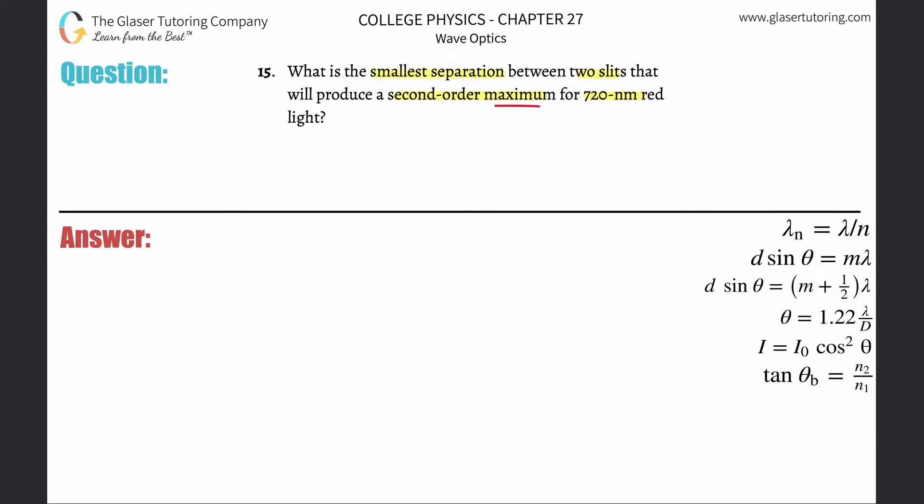It's talking about a maximum, so it's constructive interference. We're going to use this formula on the right. This formula deals with double slit constructive interference. The distance between slits multiplied by sine of the angle equals the order multiplied by the wavelength: d sin θ = mλ.